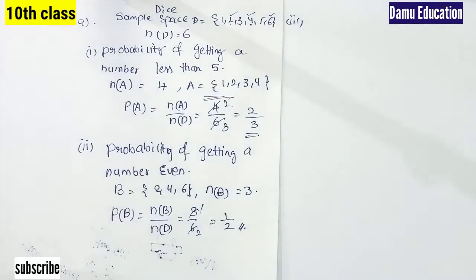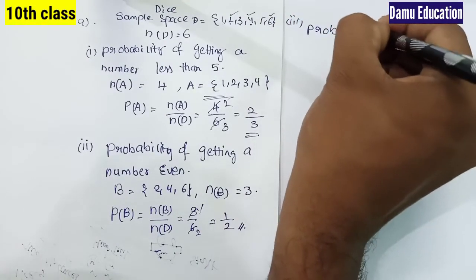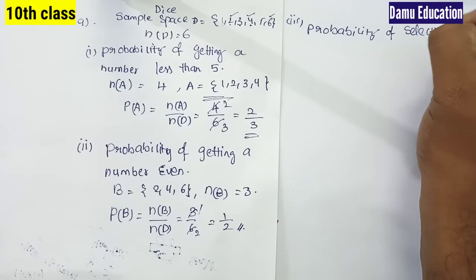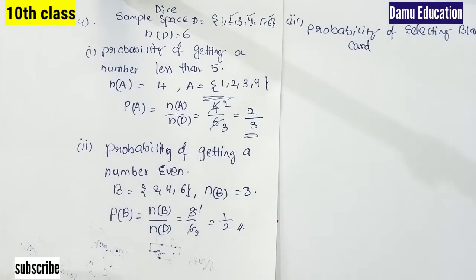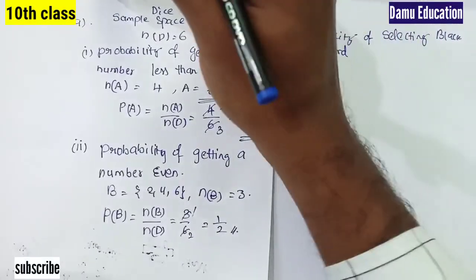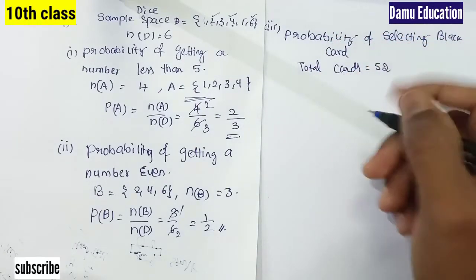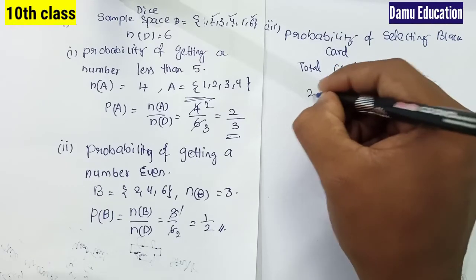Third problem: in a pack of cards, we shuffle the cards. Find the probability of selecting a black card. Total cards = 52. Half of 52 is 26, so 26 will be black and 26 will be red.